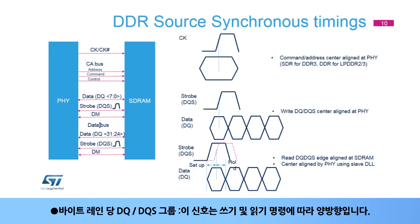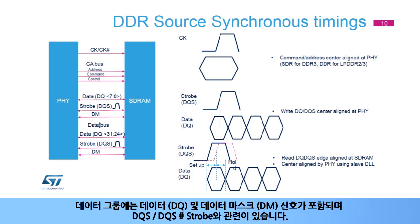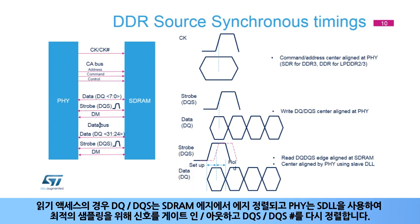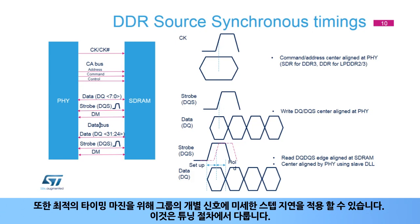The DQ-DQS group per byte lane: these signals are bidirectional according to read and write commands. The data group includes data, or DQ, and data mask, or DM, signals, related to the DQS-DQS# strobe. For write access, DQ and DQS are center-aligned at PHY output by the MDLLs. For read access, DQ and DQS are edge-aligned at SDRAM edge, and the PHY will gate in-and-out signals and realign DQS and DQS# for optimal sampling using the SDLL. Fine-step delay can be applied to individual signals in the group for optimal timing margins.